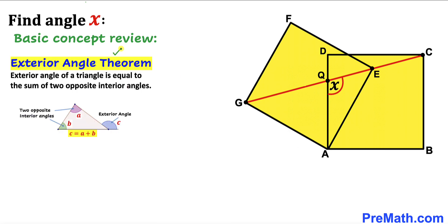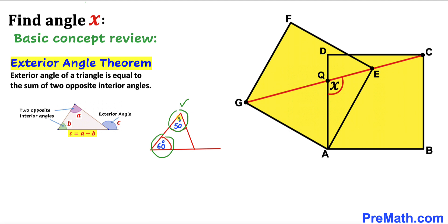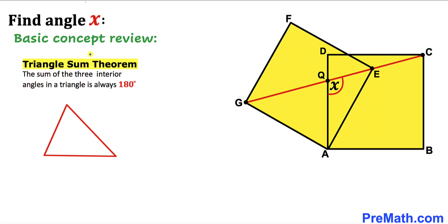Now let's recall the exterior angle theorem. According to this theorem, the exterior angle of a triangle is equal to the sum of the two opposite interior angles. As you can see in this diagram, angle C is our exterior angle such that C equals A plus B. For example, if we have 60 degrees and 50 degrees as the two opposite interior angles, then the exterior angle is going to be 110 degrees.